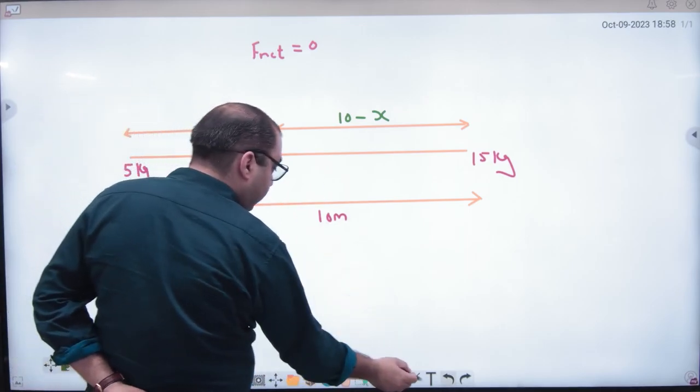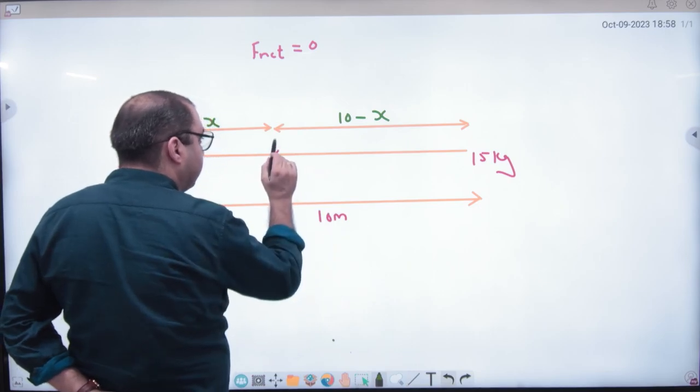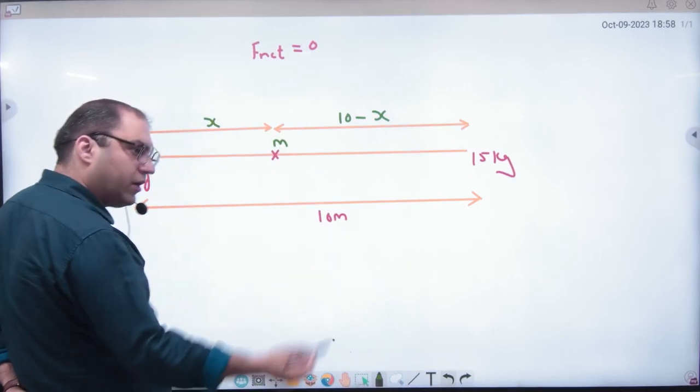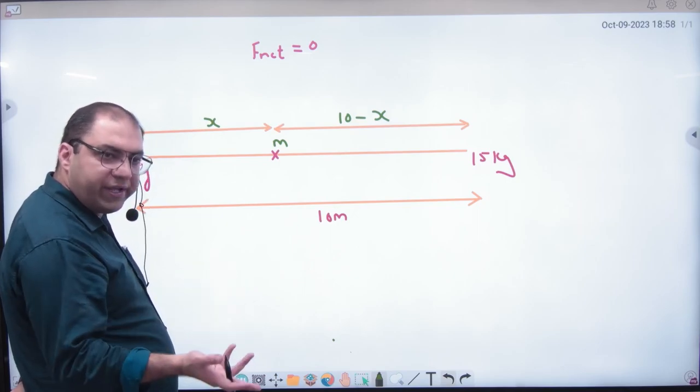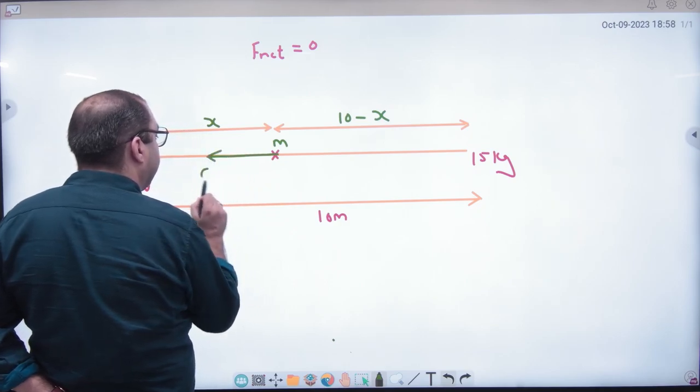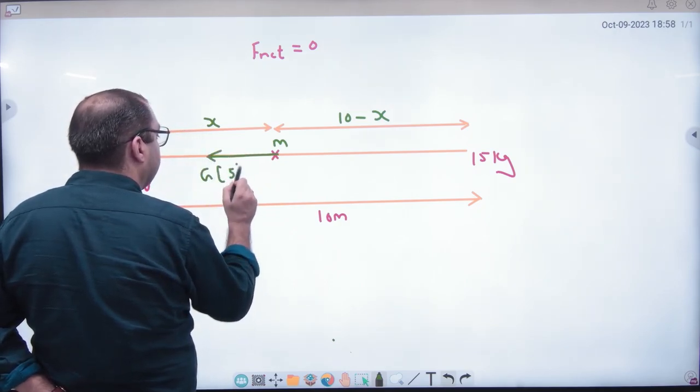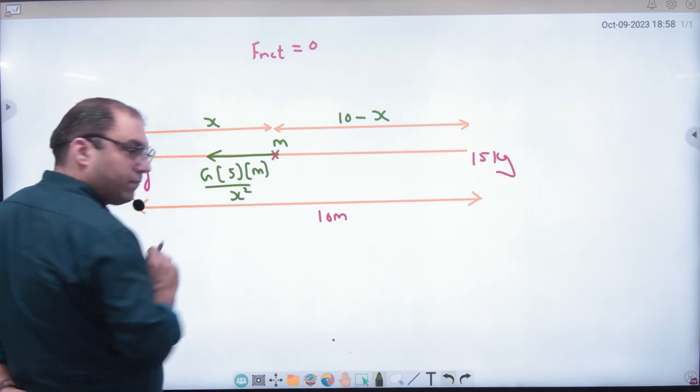So at this point, rule number one, what will we do? Imagine that mass is placed here, what is it? M. Whatever you do. Because for force, at least two masses are needed. So assume anything. So 5 kg will attract this mass towards itself. M1, M2, divided by X square.